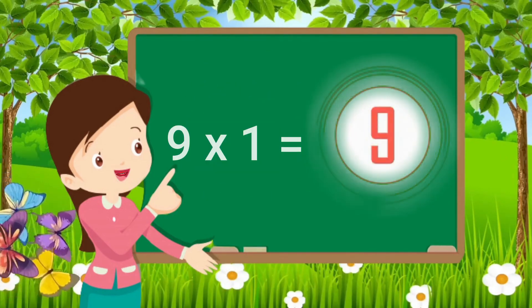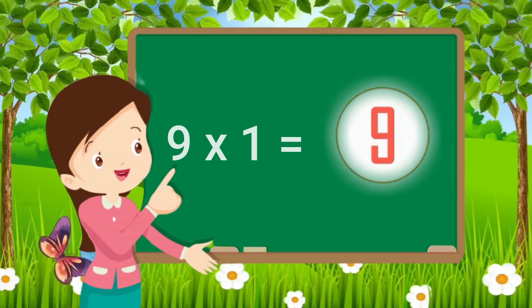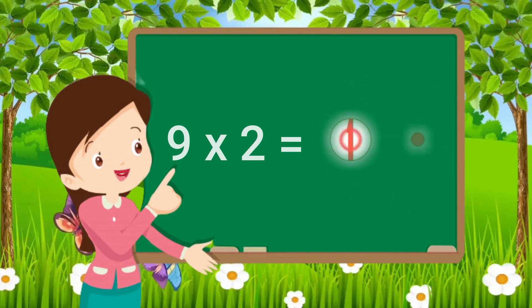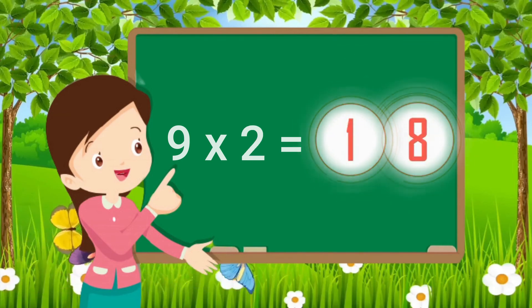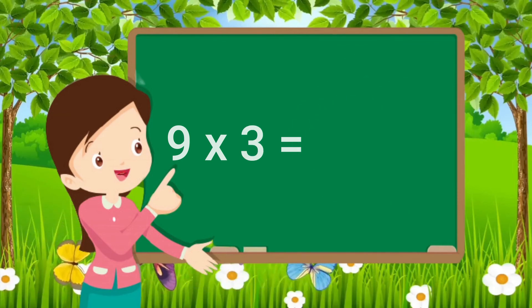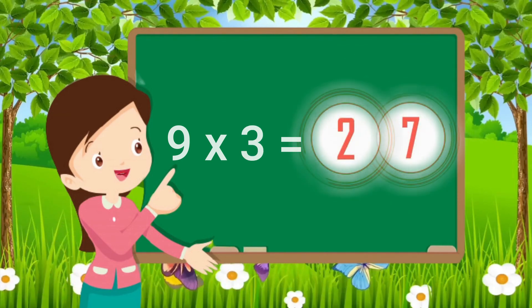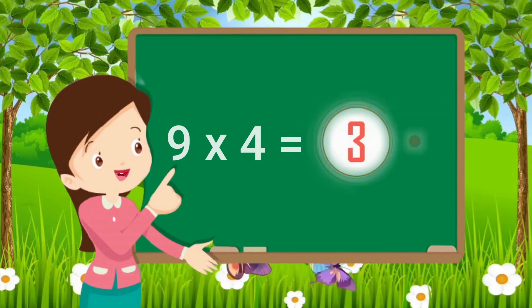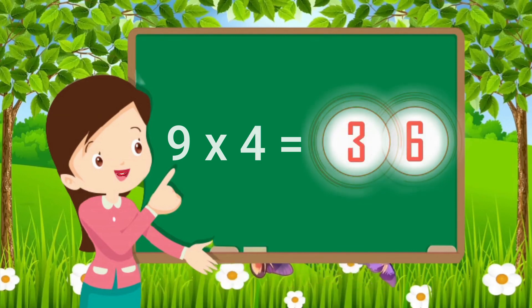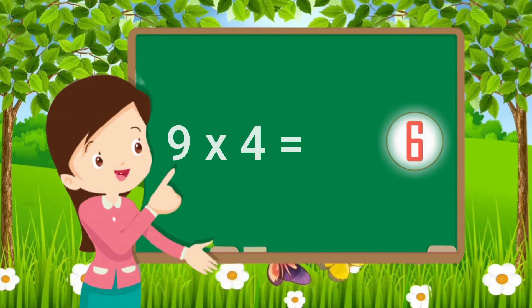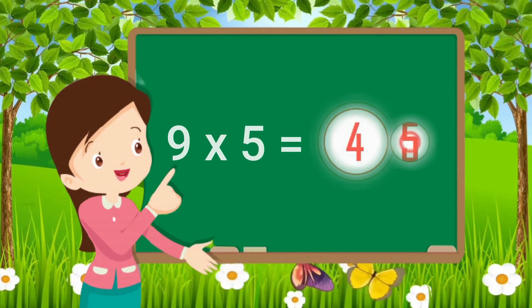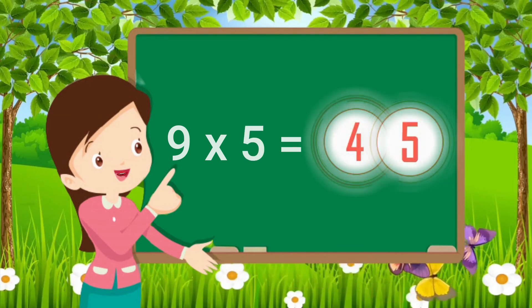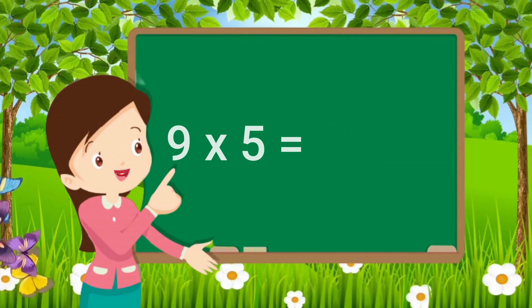Nine ones are nine. Nine twos are eighteen. Nine threes are twenty-seven. Nine fours are thirty-six. Nine fives are forty-five.